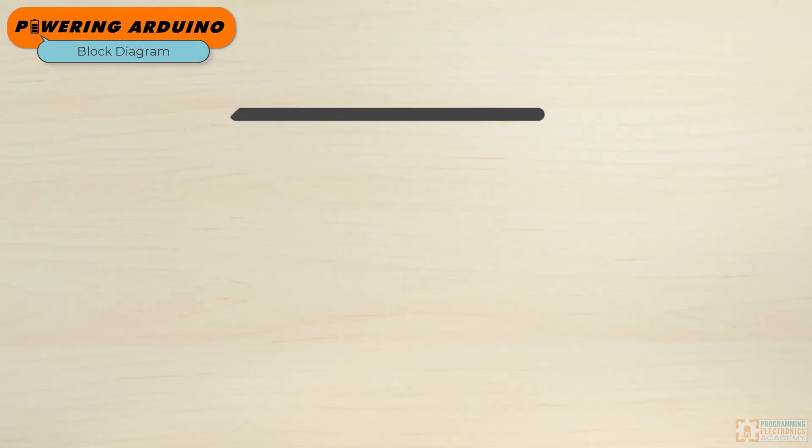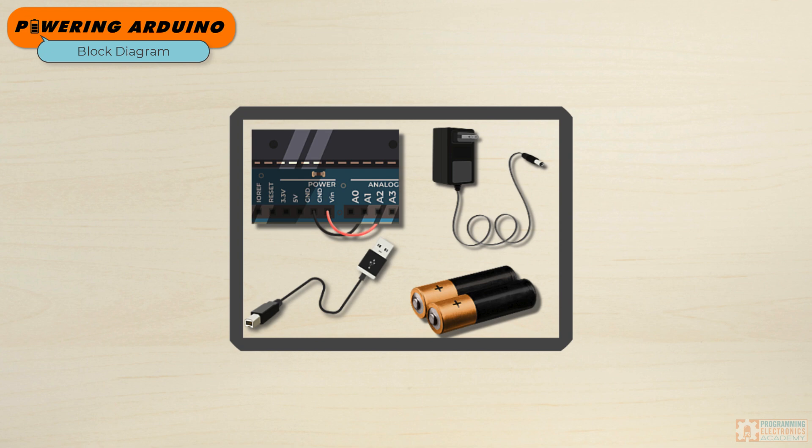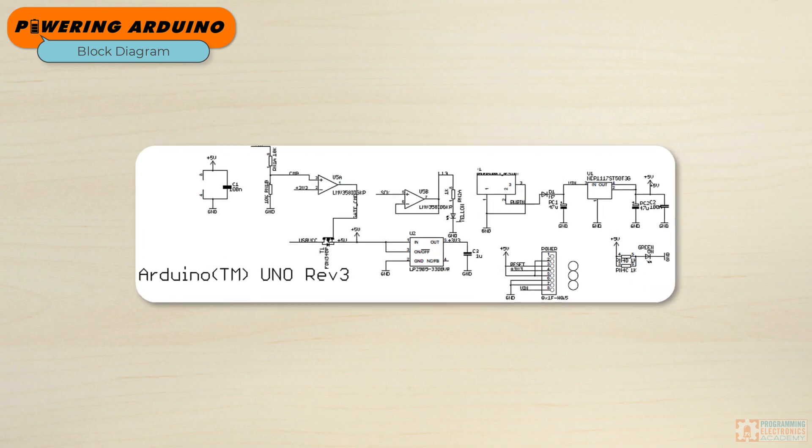One of the best ways to get a big-picture overview of how power is provided to an Arduino board is to look at the Arduino board's schematic.